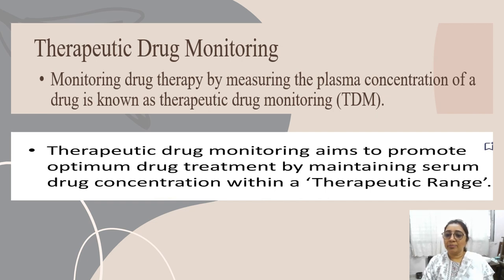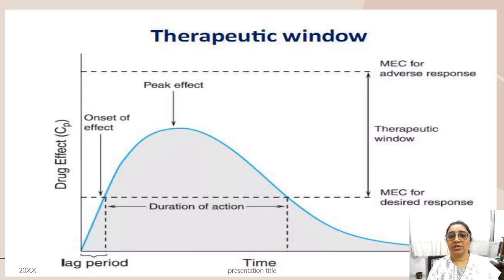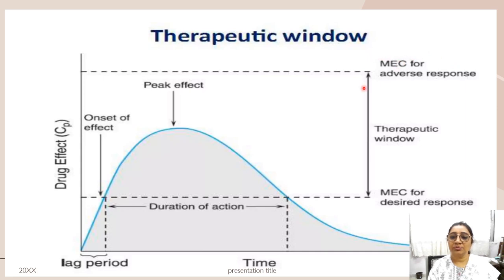Therapeutic drug monitoring aims to promote optimum drug treatment by maintaining serum drug concentration within the therapeutic range. Therapeutic range is the range between minimum effective concentration, or minimum concentration to produce a desired response, and minimum toxic concentration, or concentration which produces adverse drug response. The plasma concentration should be within this therapeutic window.